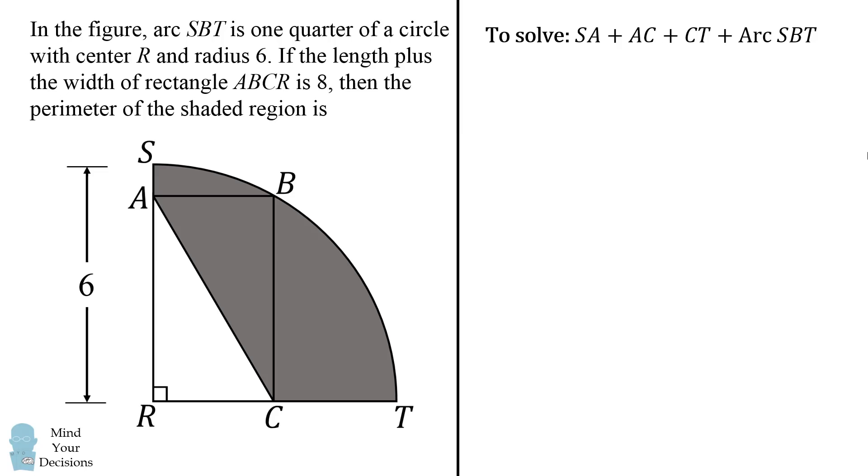We'll start out with the length of the arc. We are given in the problem that arc SBT is one-quarter of the circle which has a radius of 6. So the length of arc SBT will be one-fourth of the circumference, which is 2πr divided by 4. r is equal to 6, so this simplifies to be 3π.